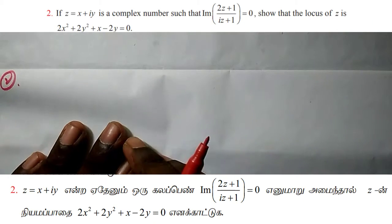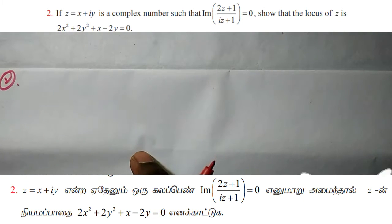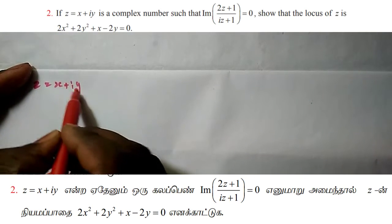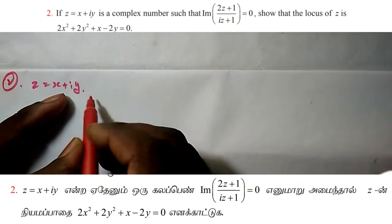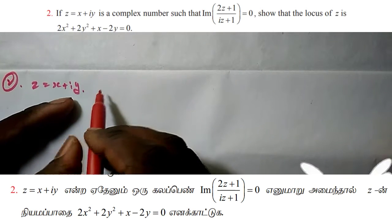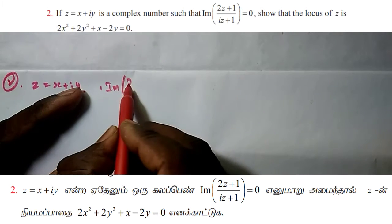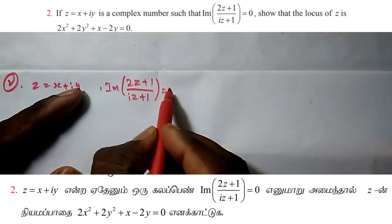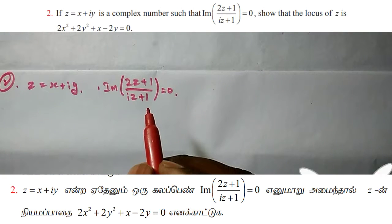Hi friends, welcome! This is Sakti. In this video, we'll look at the second sum. z equals x plus iy is a complex number such that the imaginary part of (2z+1)/(iz+1) equals 0.